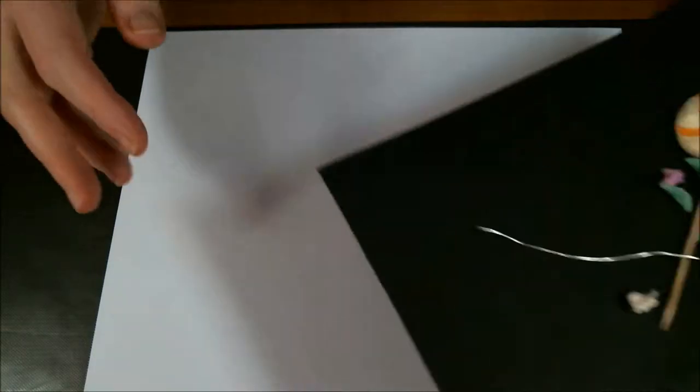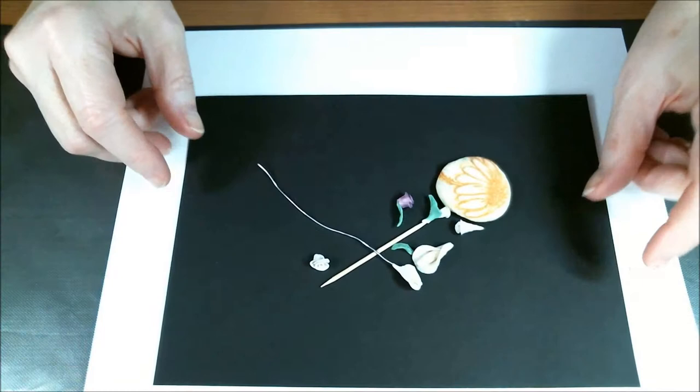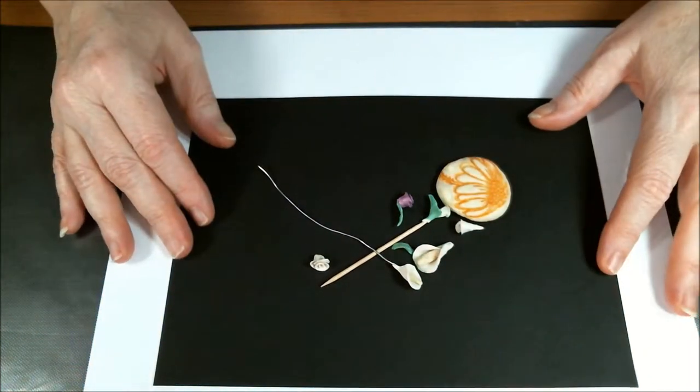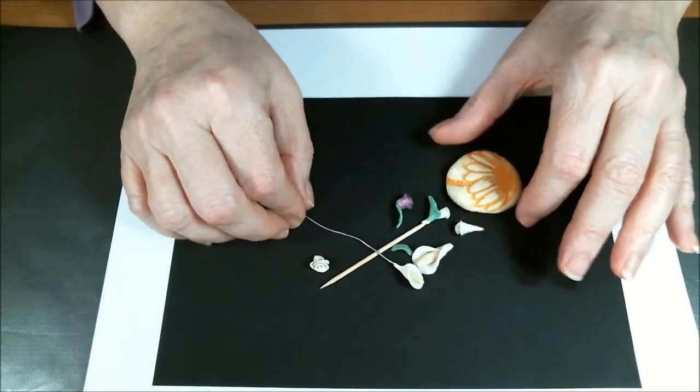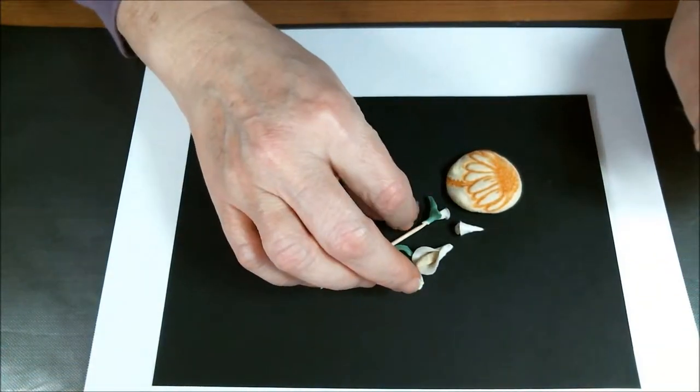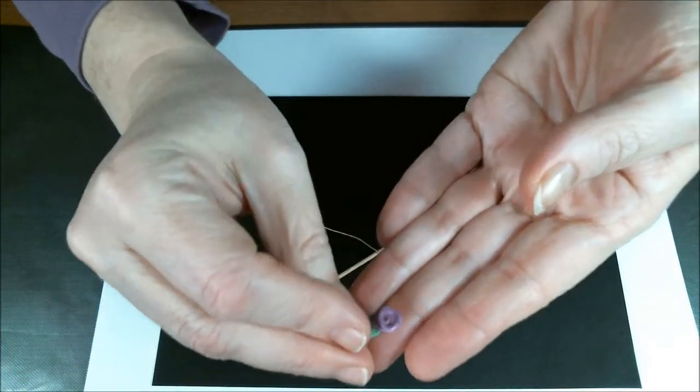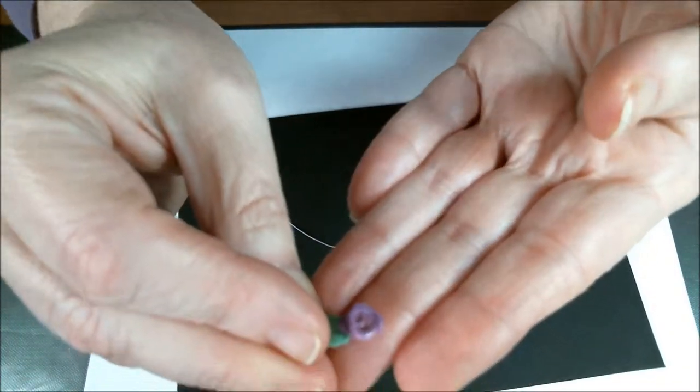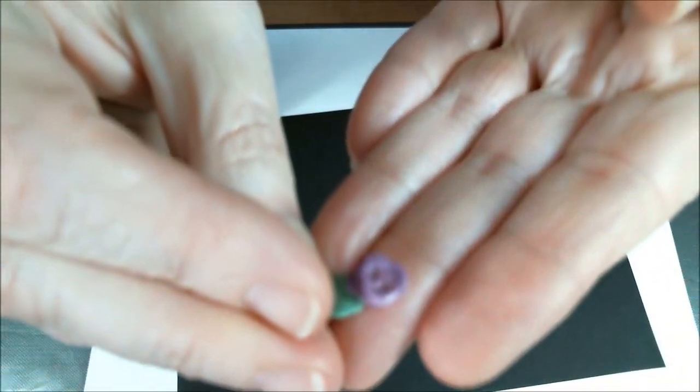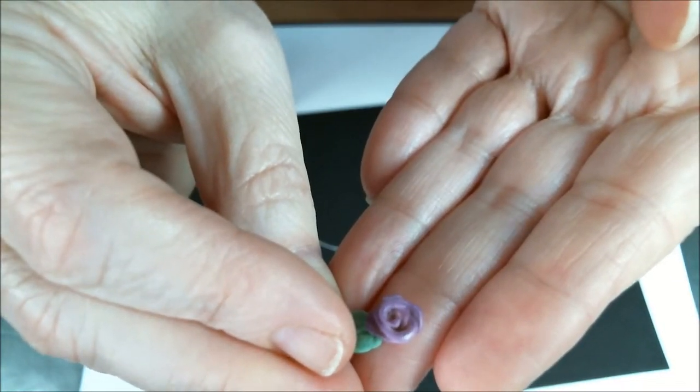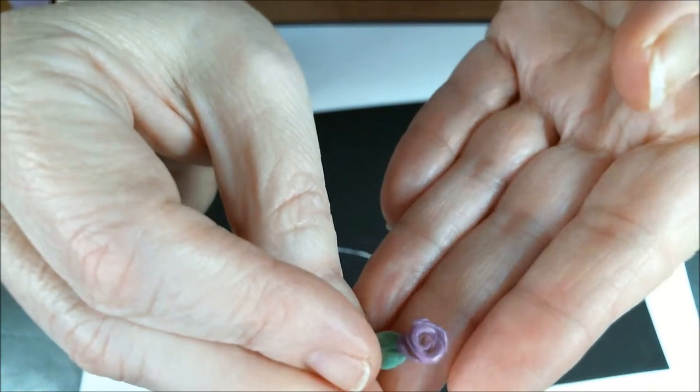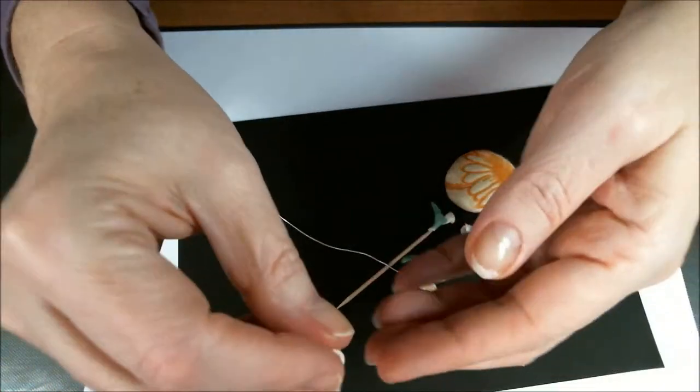What we're going to be doing is making a type of clay out of some general household items that you probably already have sitting around, including something from your kitchen. Let me give you a quick look at what we're going to be creating. These can be used for embellishments for your cards, for your projects. You can put them on little wooden boxes, whatever you choose.